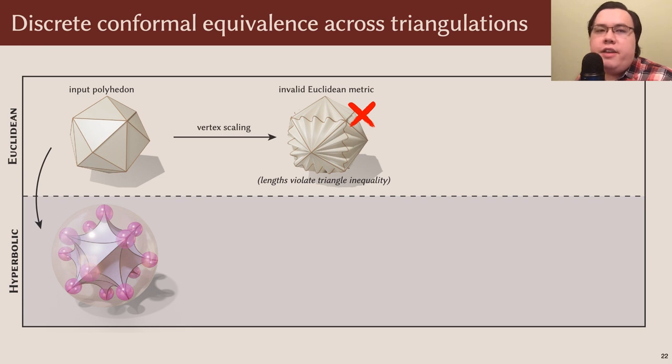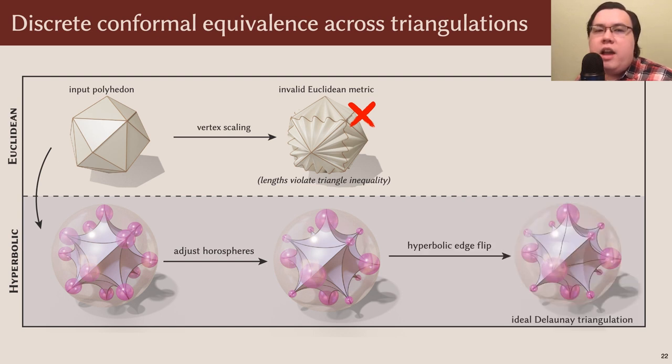On the hyperbolic side, vertex scaling simply corresponds to shifting horospheres, making some bigger and others smaller. But no matter which horospheres we end up with, they always encode the same valid ideal polyhedron. So we can flip to a hyperbolic Delaunay triangulation using hyperbolic edge flips. With this in hand, we then pass back to the Euclidean setting and obtain a valid Euclidean triangulation.